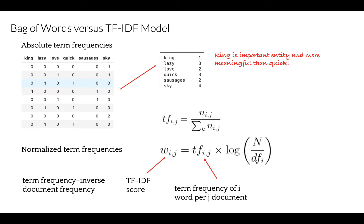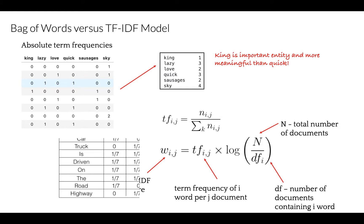Inverse Document Frequency, IDF, is used to calculate the weight of rare words across all documents in the corpus. The words that occur rarely in the corpus have a high IDF score. In our function, we have n, total number of documents, divided by df, number of documents containing that specific word.